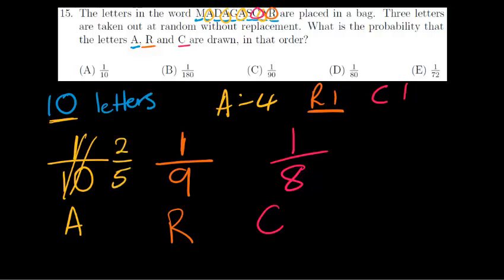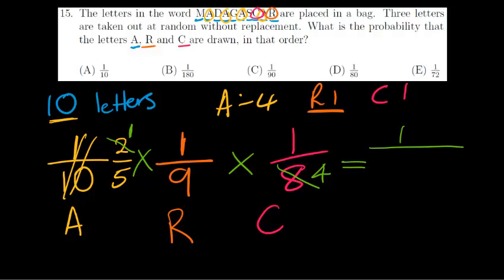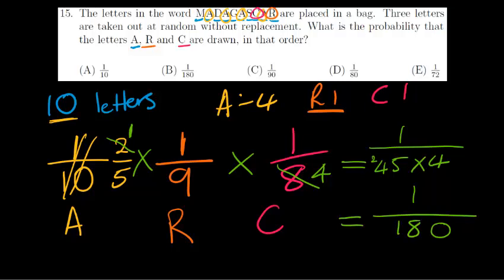Just to make it smaller numbers: 2 over 5 times 1 over 9 times 1 over 8. I can cancel 2 and 8 — 2 goes into 2 one time, 2 goes into 8 four times. Now I've got 1 times 1 times 1 in the numerator, which is 1. And 5 times 9 is 45, times 4 gives me 180. So my answer is 1 over 180. My answer to question 15 is B.